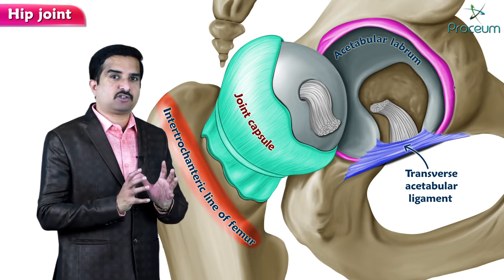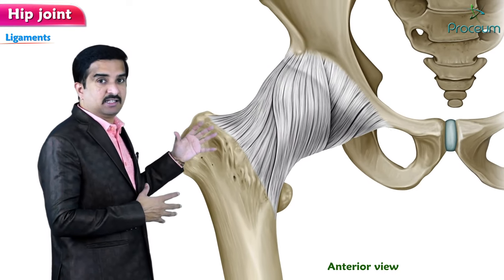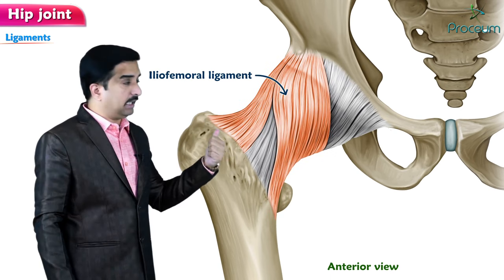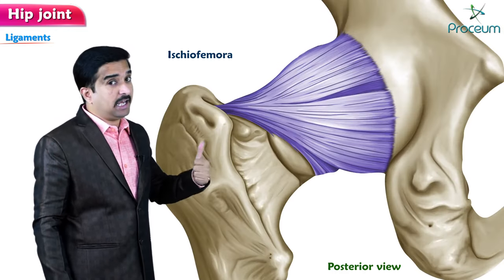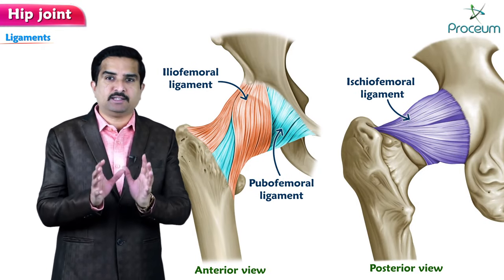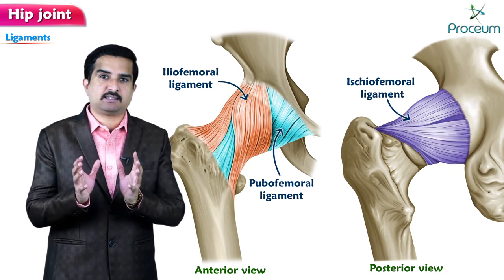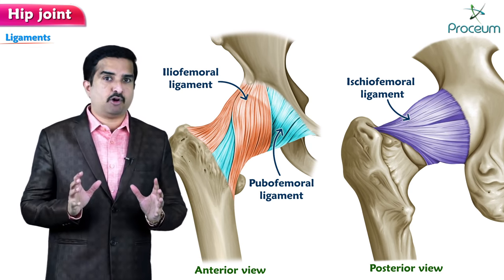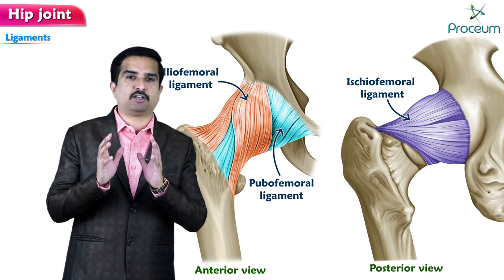Looking at the ligaments, the iliofemoral ligament, the pubofemoral ligament, and the ischiofemoral ligament — all three important ligaments act to strengthen the mobile capsule of the joint. These ligaments strengthen the joint capsule, so it is very important to concentrate on the ligaments of the hip joint.